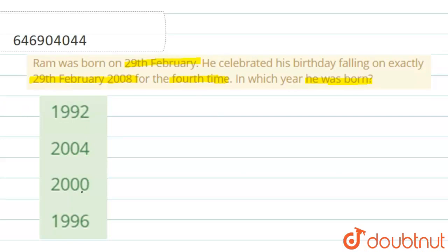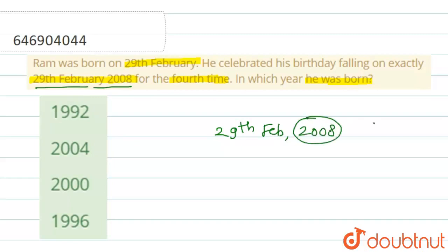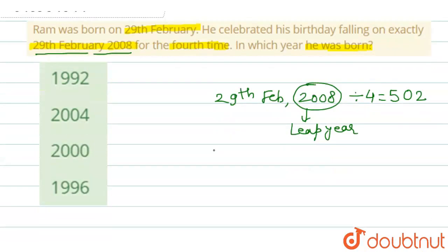According to the information, Ram celebrated his 4th birthday on 29th February 2008. Since if we divide this year by 4, we get a complete integer — it means this is a leap year. It means Ram would celebrate his birthday every 4th year.